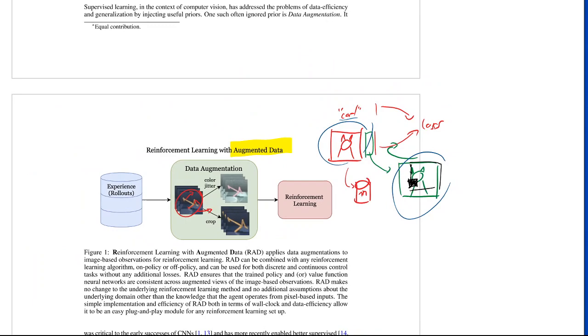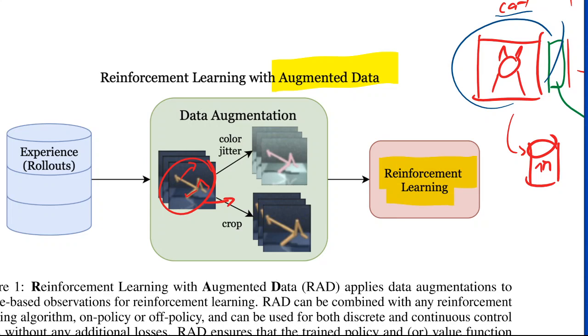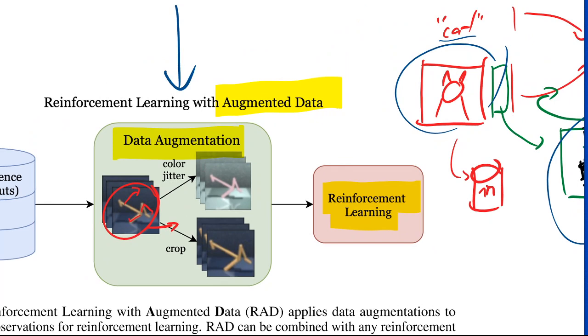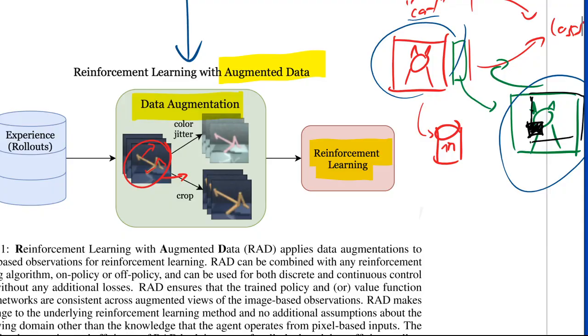So this paper basically claims, if you want to do reinforcement learning, if you simply do data augmentation with the input data to that reinforcement learning, it works much, much better. Of course, we can expect since in supervised learning this is a general trick, that it would do something for reinforcement learning as well. But this paper basically claims that this one plugin is basically as much of a gain as pretty much the last five years of research on reinforcement learning on these things.